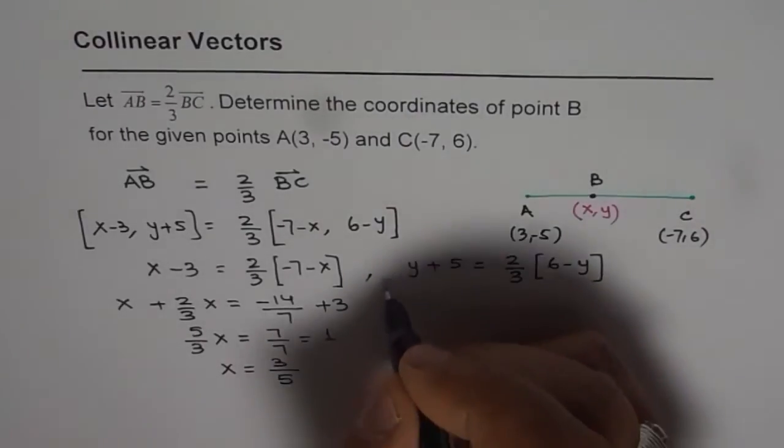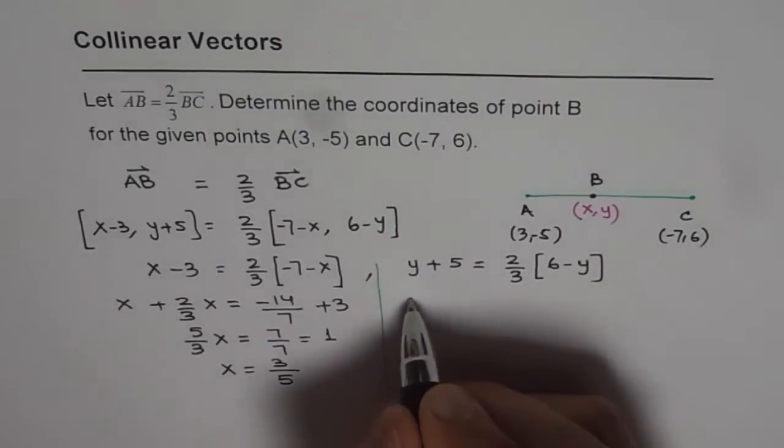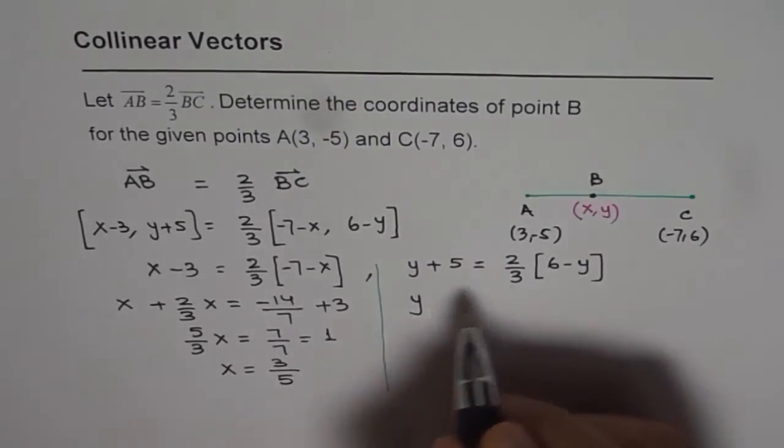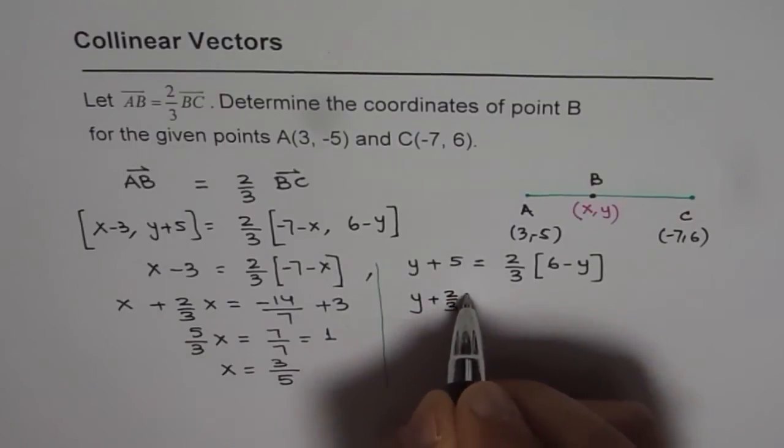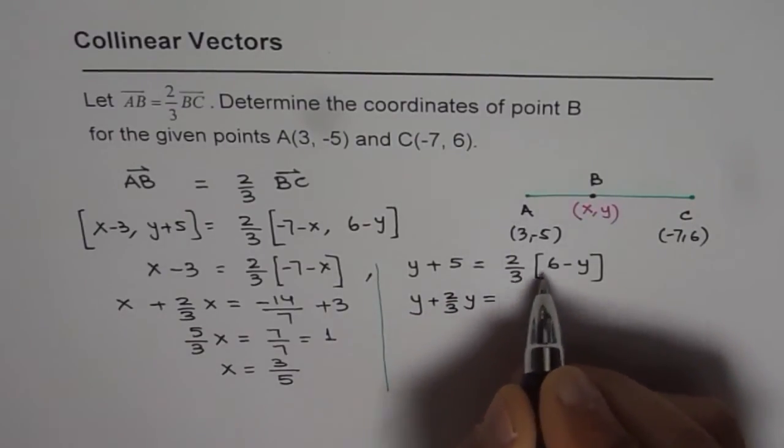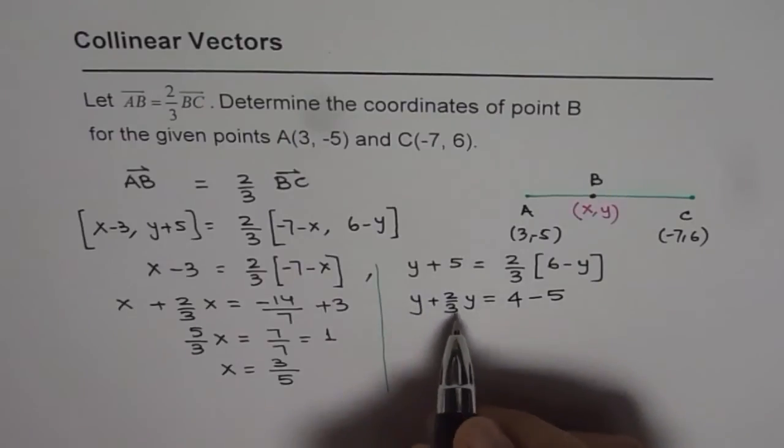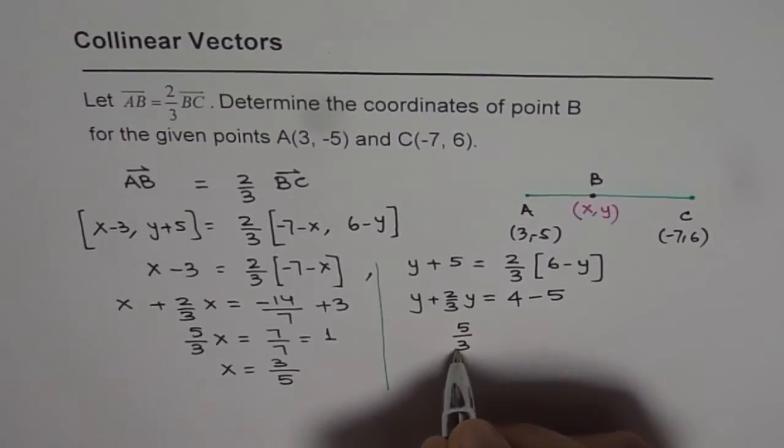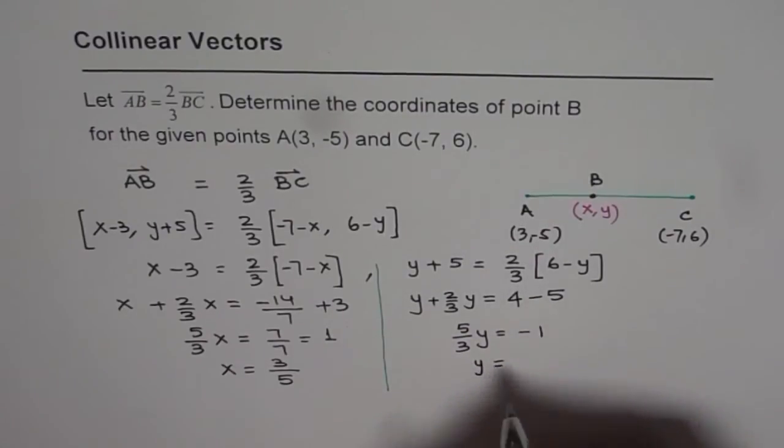Now on this side we can find what Y is. We will bring this Y term to the left side, so it becomes plus 2 over 3 Y equals 2 thirds of 6, which is 4 minus 5. So 3 plus 2 is 5. So we get 5 over 3 Y equals minus 1. And so Y equals minus 3 over 5.